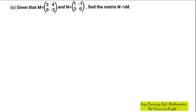Question 1c was as follows: given that M is equal to [2, 4, 0, -2] and N is equal to [1, -1, 3, 0], find the matrix N minus one-half M.